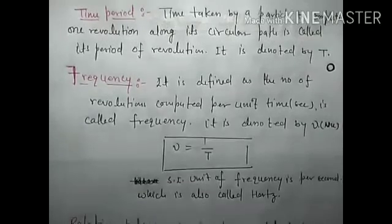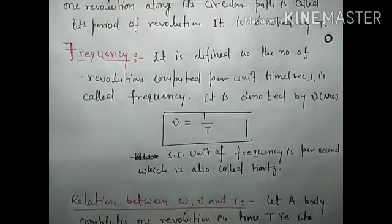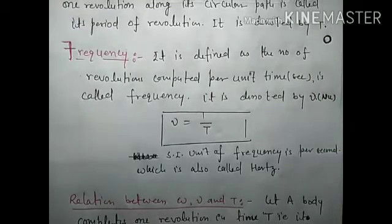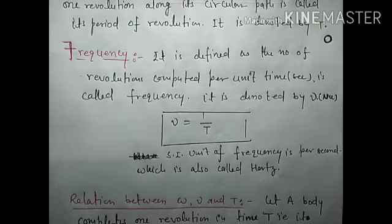Frequency is defined as the number of revolutions completed per unit time. Suppose a body is moving along a circular path at very high speed — the number of revolutions completed in one second is called frequency.